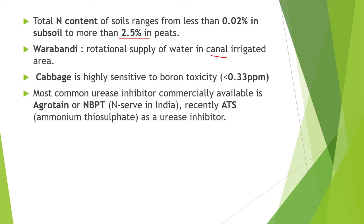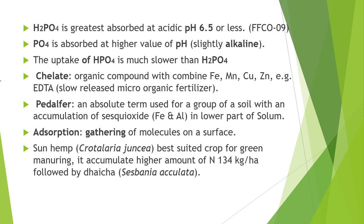Cabbage is highly sensitive to boron toxicity. The most common urease inhibitor commercially available is agroten or NBPT. And recently, ATS — ammonium thiosulphate — is used as a urease inhibitor. Next point is, H₂PO₄⁻ is greatest absorbed by acidic soil having pH less than 6.5.